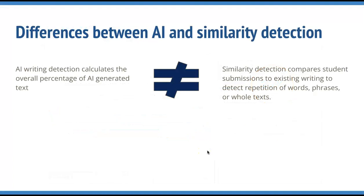Turnitin's AI writing detection technology is different from the technology used within similarity detection. The AI writing detection model calculates the overall percentage of text in the submitted document that was likely generated by an AI writing tool. Similarity reports, on the other hand, use metadata and forensic language analysis to detect if the submitted assignment was written by someone other than the student. It will not be able to indicate if it was written by AI, only that the content is not the student's own work. That's why your similarity and AI percentages will rarely, if ever, be equal to one another.